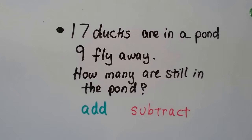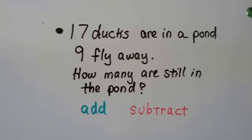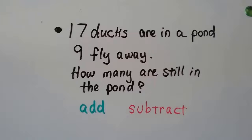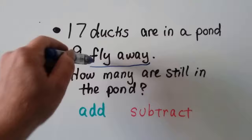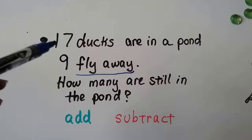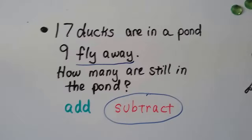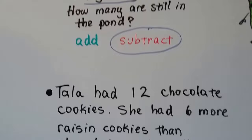There are 17 ducks in a pond. 9 fly away. How many are still in the pond — add or subtract? Do you see any clue words? It says that 9 fly away, which means they left, they're gone. So we need to find out what 17 minus 9 is — that's subtraction. That'll tell us how many are still in the pond. We find the difference between the two numbers.